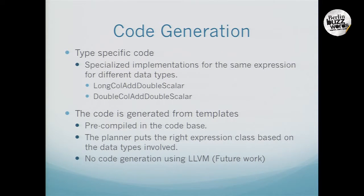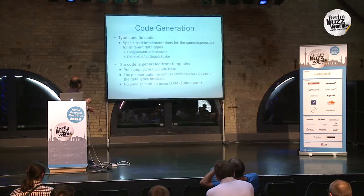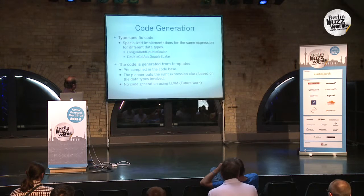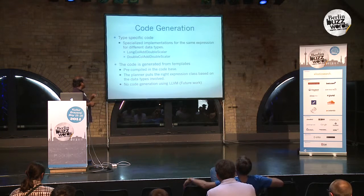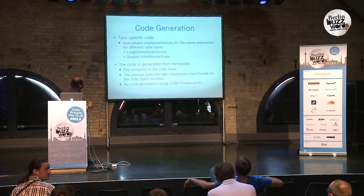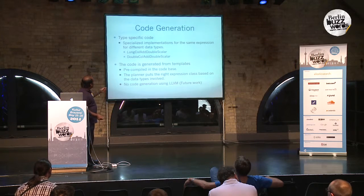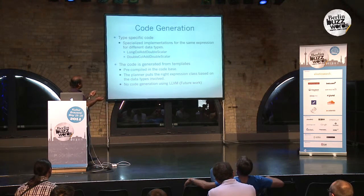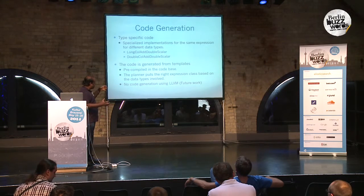That was the core technique. Now, how are we generating that code? Because it is a lot of repetitive code — for example, DoubleColumnAddDoubleScalar. We generated it using templates: for every data type, reuse the template, generate the code, compile it, and it is pre-compiled as part of the code base. Many databases do dynamic code generation using techniques like LLVM, but we haven't done that — that is future work we will evaluate. There are advantages with LLVM because the compiler can do optimizations across expressions. Our approach writes optimized code per operator like LongColumnAddDoubleScalar, but if the expression consists of a whole expression tree, an LLVM approach can generate more optimized code.